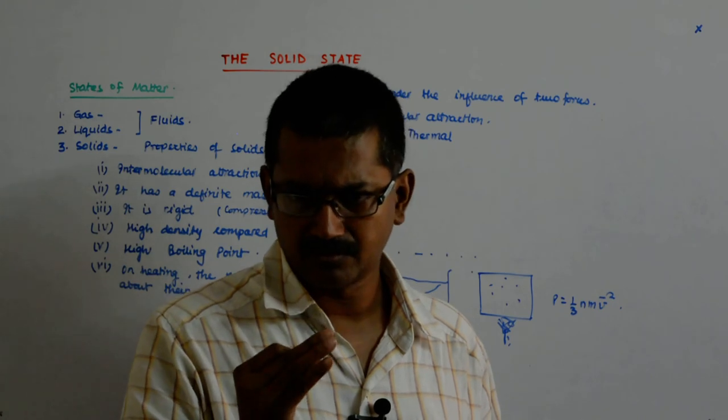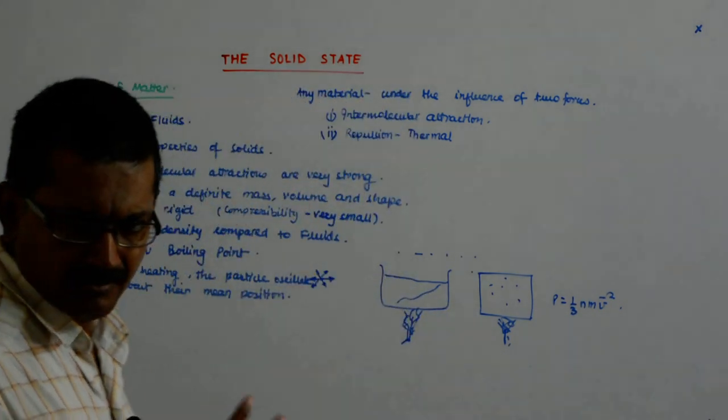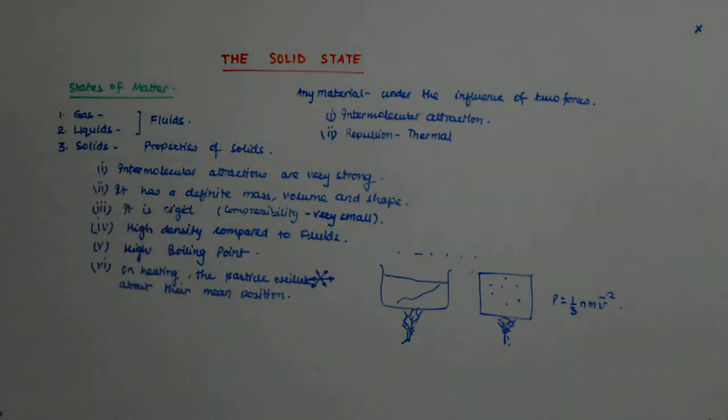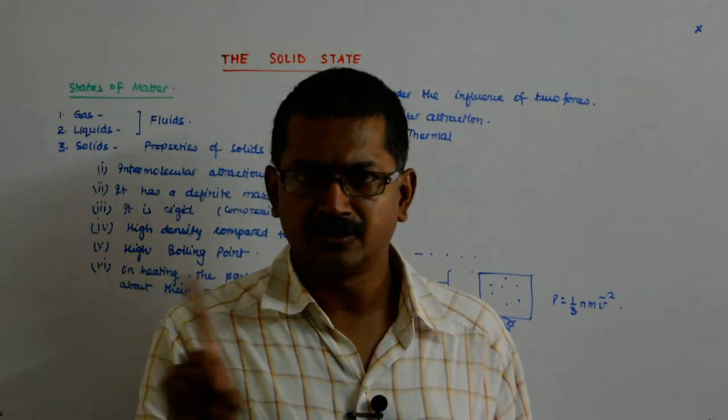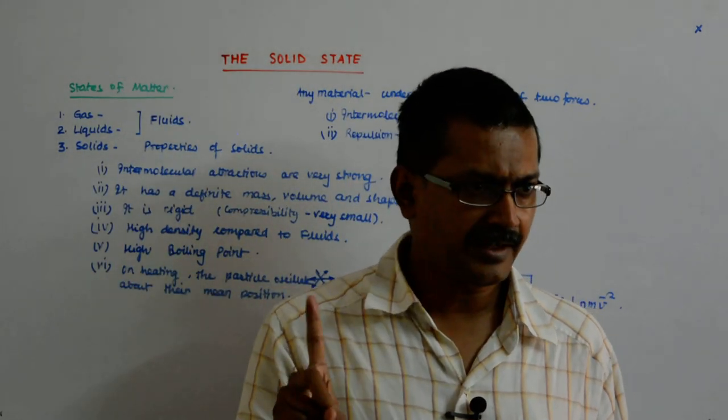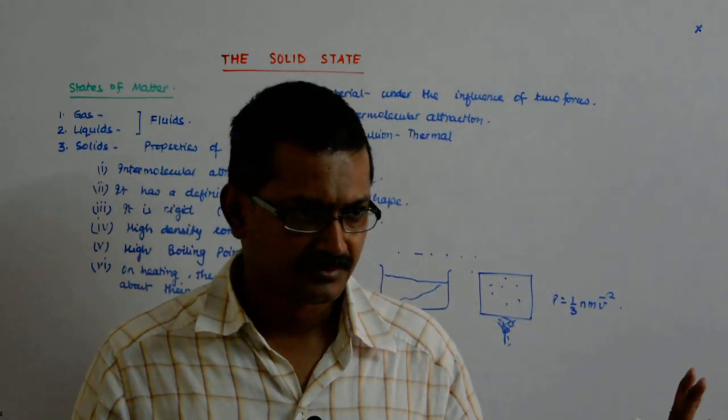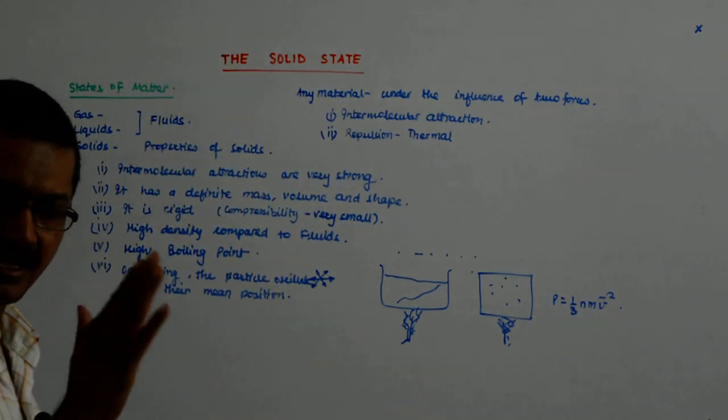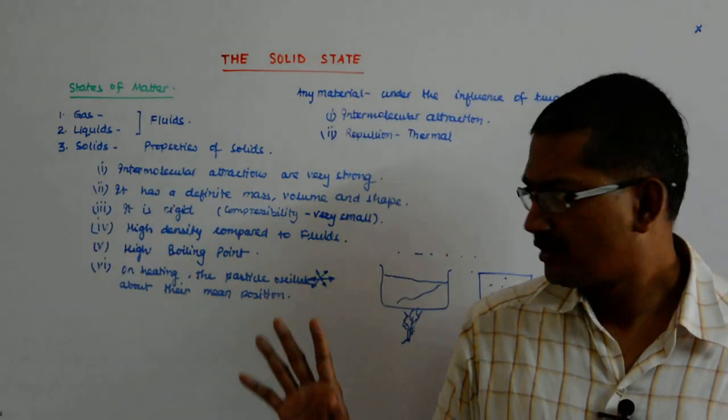Oscillation means there is a mean position, and if the oscillation is very fast, we call it vibration. So it starts oscillating at a very high speed. As you start increasing the temperature, when this oscillation amplitude becomes high, at a point it breaks. That is the point where it starts getting converted into liquid.